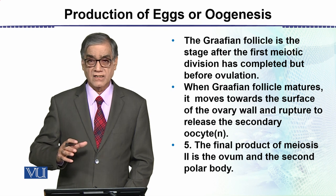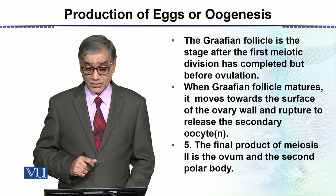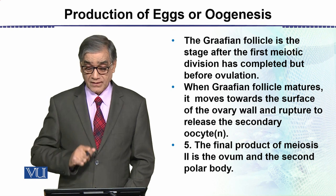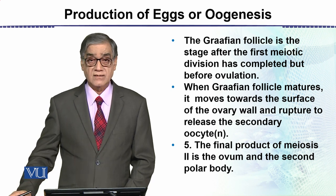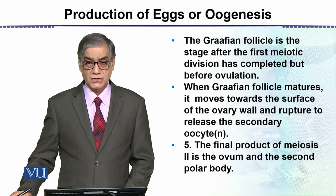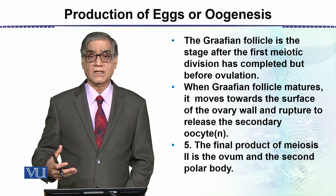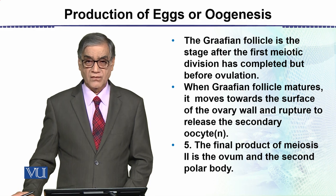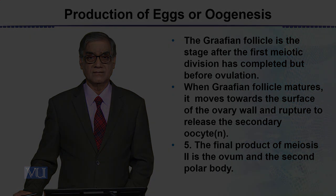The Graafian follicle can be seen on the surface of the ovary, though of course not without surgery. The final product of meiosis is the ovum and the second polar body. This is how ova formation occurs within the ovary.